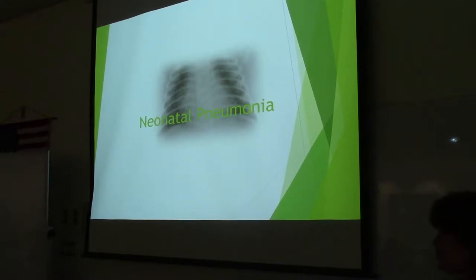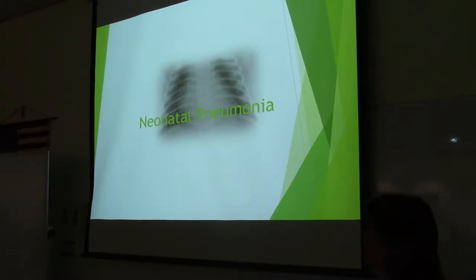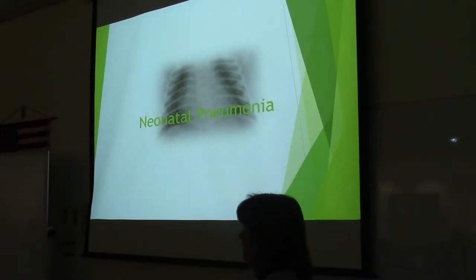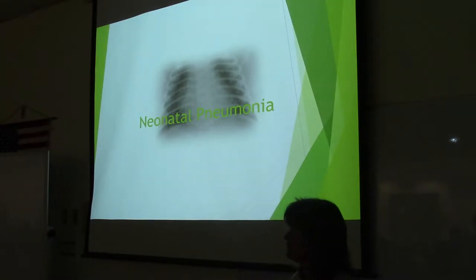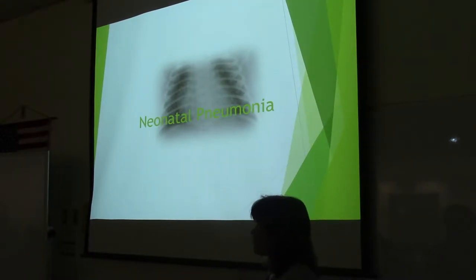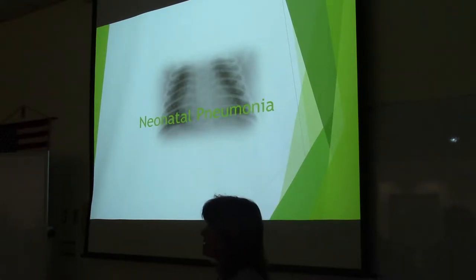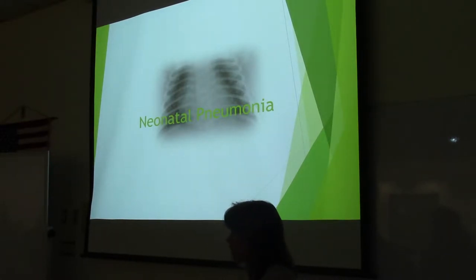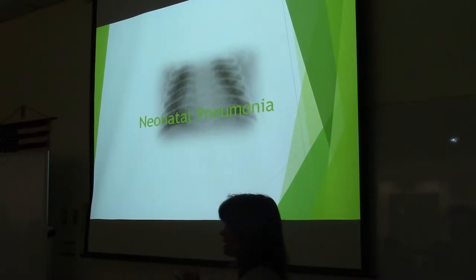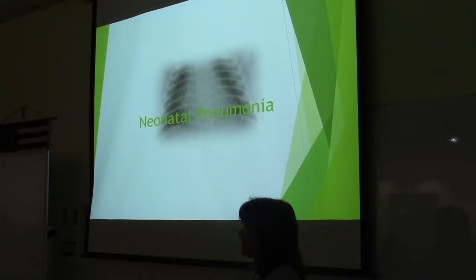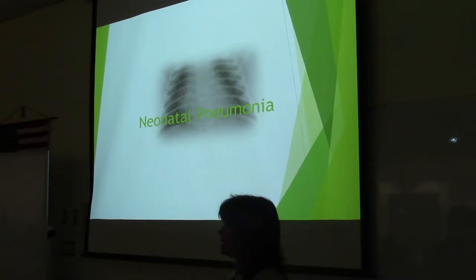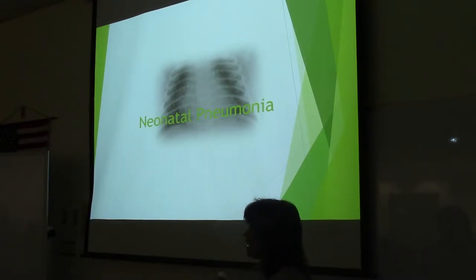We'll get started with neonatal pneumonia. For newborns, it's possible that they can be born already infected. One way is that a virus crossed over from the mom's blood into the placenta and infected the fetus. Another way they can become infected in their lungs is once the amniotic sac ruptures and they lose their protective fluid — bacteria can migrate from the vagina up into the uterus and infect the fetus.